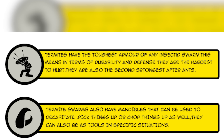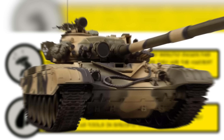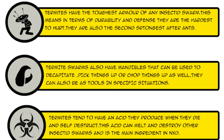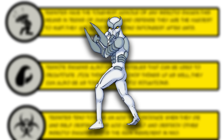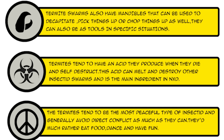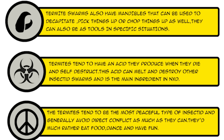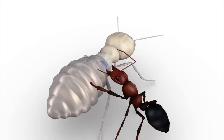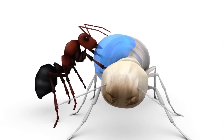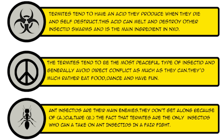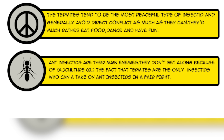Termites have the strongest armor of any insectid swarm, making them the hardest to hurt — they're like tanks. You could throw a building on them and they'd probably just walk away. They have the second strongest upper body strength after ants. Termite swarms also have mandibles that can decapitate, pick things up, or chop things up. They also produce an acid when they die and self-destruct that can melt and destroy other insectid swarms — this is the main ingredient in something called NXD. This was inspired by real-life termites, which actually do release deadly acid when fighting ants in nature.